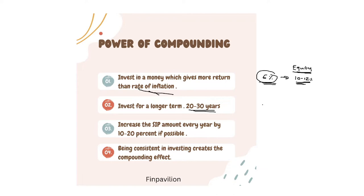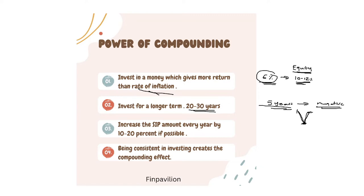Invest for a longer term — 20 to 30 years. It is seen that if you are investing in the stock market or a mutual fund and you are holding for more than five years, there is very little probability of generating a negative return. You should hold your investment for a longer duration. Even during COVID when the market collapsed and most people withdrew, those who stayed invested were protected. If the price drops, you should actually invest more — that is the opportunity.